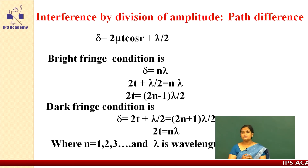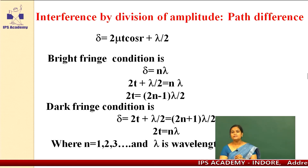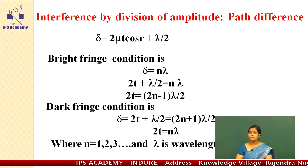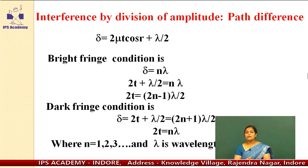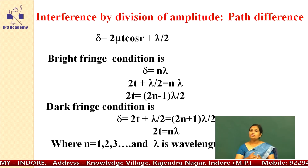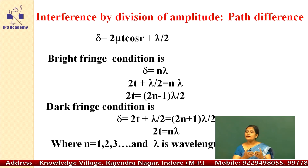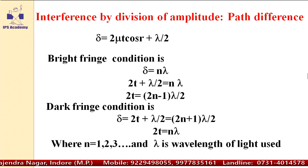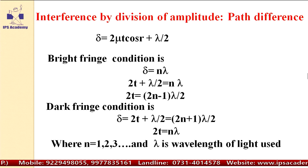You should know the path difference between the two light beams which are going to interfere. The path difference between the interfering beams is denoted by delta: delta = 2μT cos(R) + λ/2, where μ is the refractive index, T is the thickness of the film, R is the angle of refraction, and λ is the wavelength of light used. Lambda by 2 is added because we are observing from the reflected region of the light — this is the effective path difference, observed because of Stokes' treatment. There is a phase difference of pi between the light beams reflected from the reflected region versus the transmitted region. So, the effective path difference is 2μT cos(R) + λ/2.